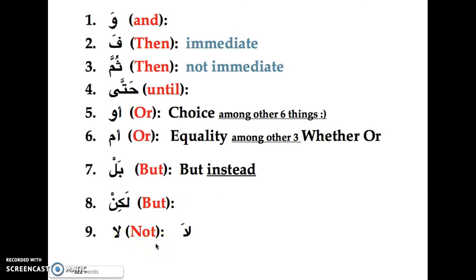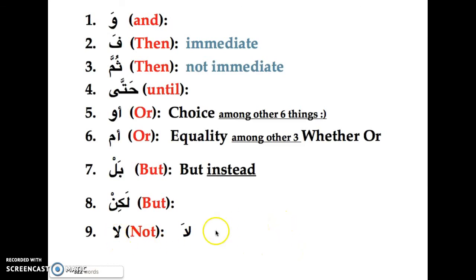لا also means 'no' when you just say it alone. But in the sense of connecting letters — as a bending letter — it behaves like 'not.' If the sentence is true, when you put لا you make it untrue. Like in programming when you put a 'not' — if you put لا at the beginning of a sentence it will make it not true; if you remove it, it becomes true. Hopefully the examples will make it clearer.